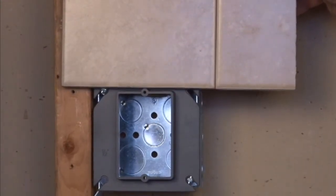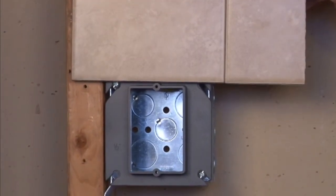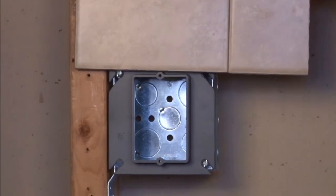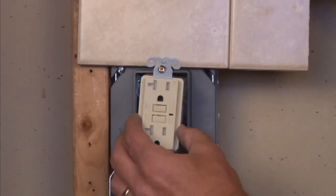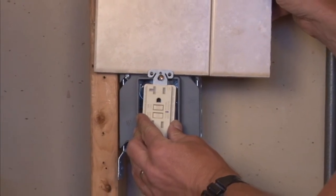Here you can see we have tile and an underlayment, which brings it out about 5 eighths of an inch. And when they mount the device afterwards and you screw it in, it mounts perfectly and it's ready for a finished wall plate.